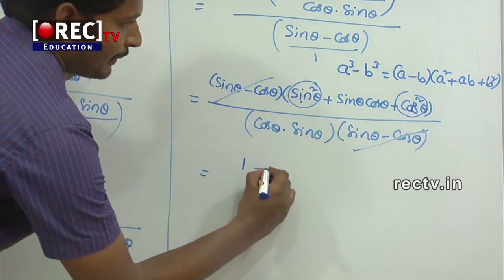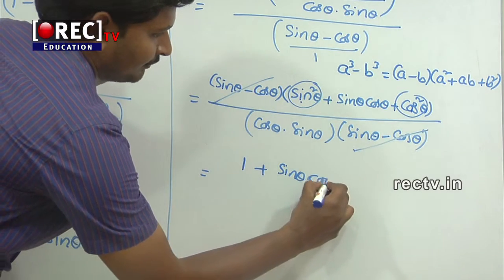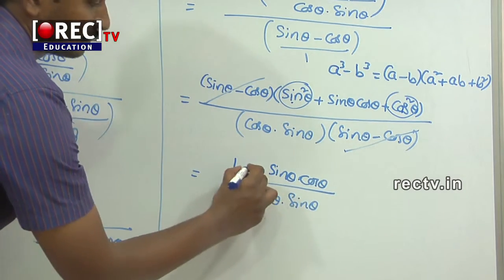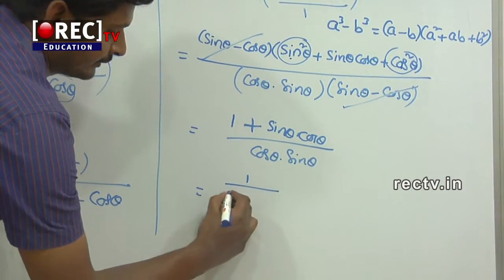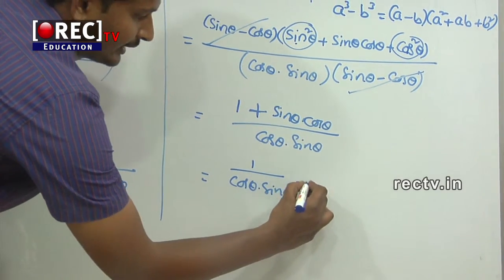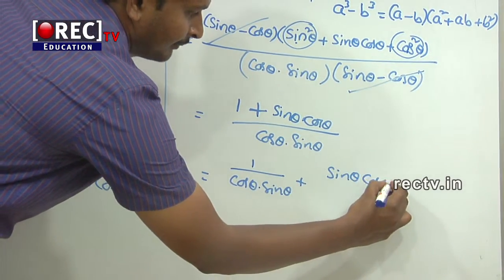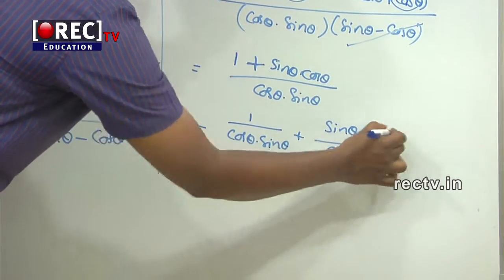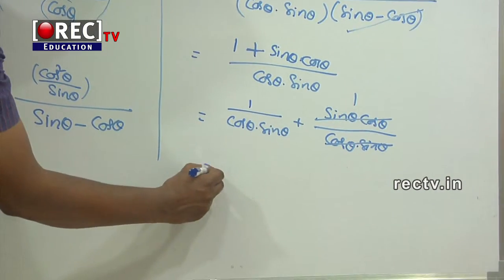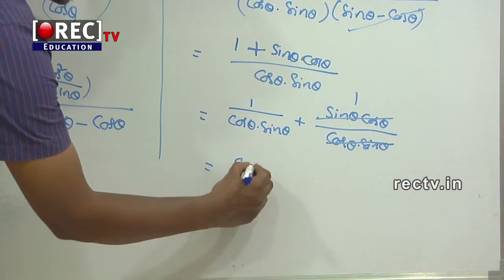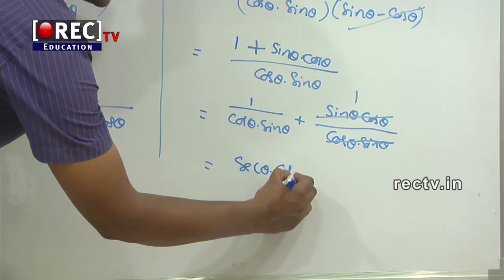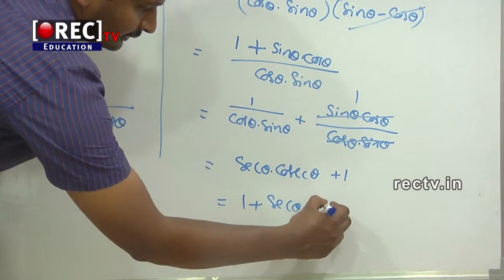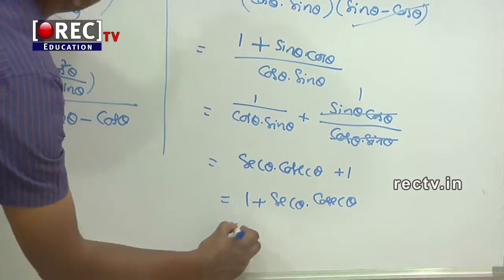This equals sin² θ plus cos² θ, which equals 1 by the first trigonometric identity, plus sin θ into cos θ, all divided by cos θ into sin θ. Splitting: 1 over (cos θ · sin θ) plus 1, which gives sec θ · csc θ plus 1, that is 1 plus sec θ into csc θ, which is the RHS.